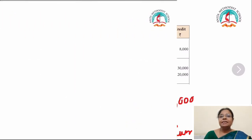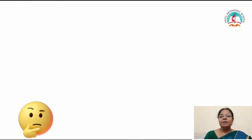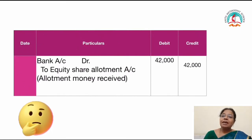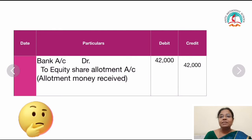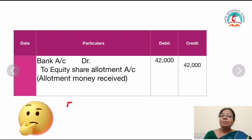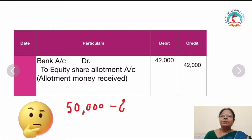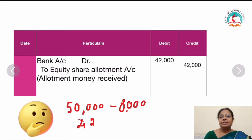The next journal entry is for allotment money received. The excess application money — 4,000 shares at the rate of rupees 2 = 8,000 rupees — is adjusted in the allotment money. So the journal entry is bank account debit: 50,000 minus 8,000 = 42,000 — to equity share allotment account. Allotment money received.